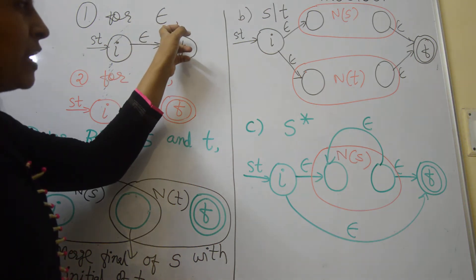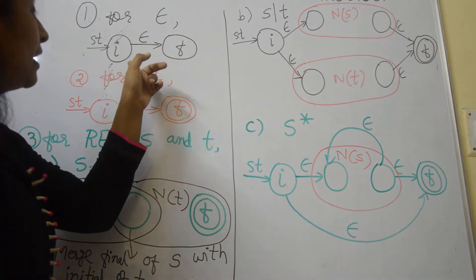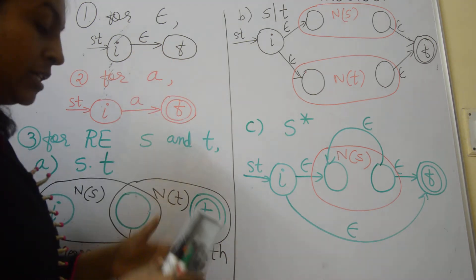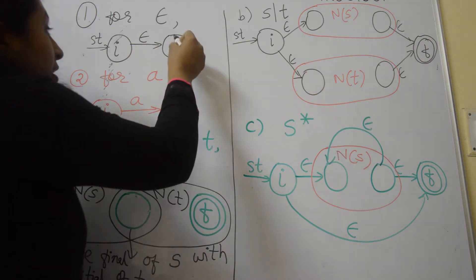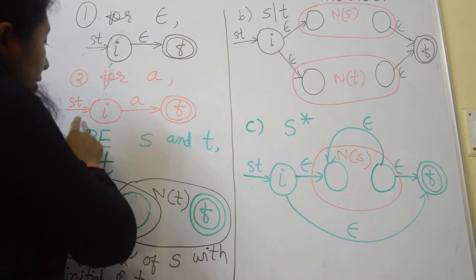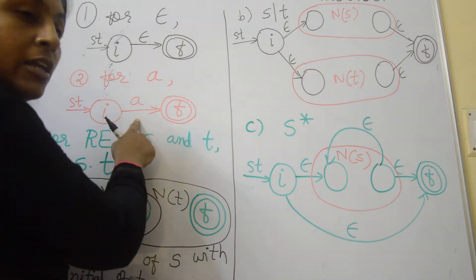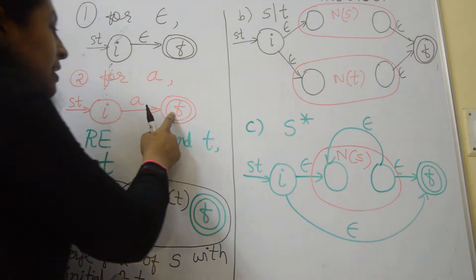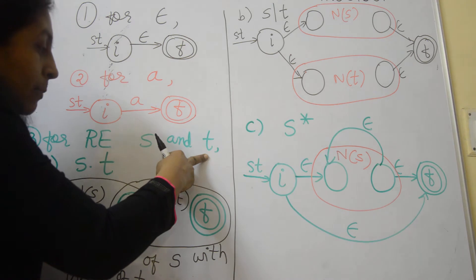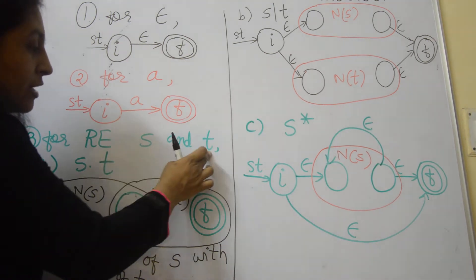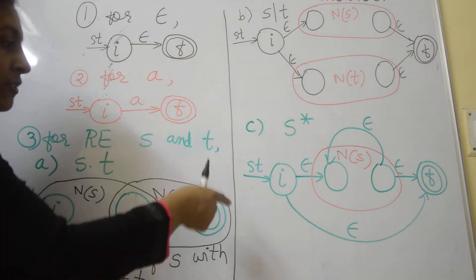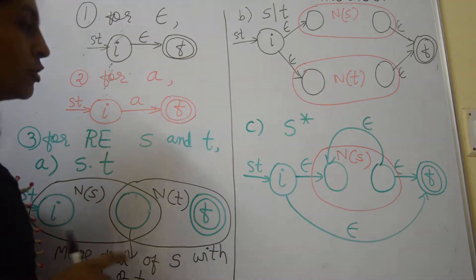First step: if there is a null transition, then directly perform a null transition from the initial state to the final state. For symbol A, we have a transition on A from the initial state to the final state. If we have multiple regular expressions, for example S and T, then to perform the three operations, the constructs are as shown.